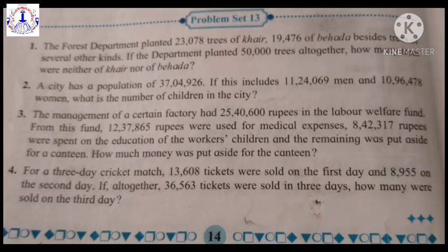Question number 2: A city has a population of 37,04,926. If this includes 11,24,069 men and 10,96,478 women, what is the number of children in the city? In this sum, you have to add the number of men and number of women to get the total number of men and women in the city. Then subtract that total from the total population of the city. In two operations — first addition, then subtraction — you will get the number of children in the city.